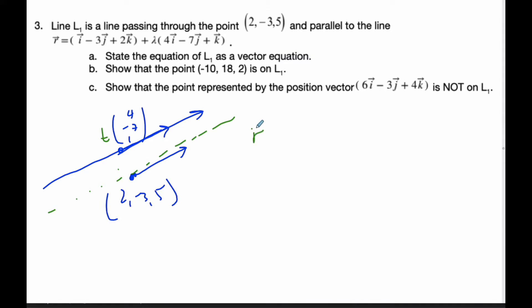So the equation for line L1 is: r = (2, -3, 5) + t(4, -7, 1). This is one of the many equations for L1.